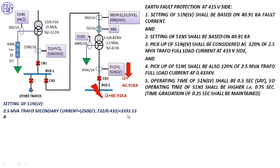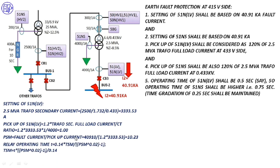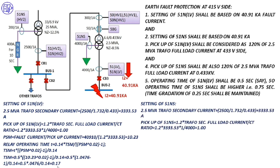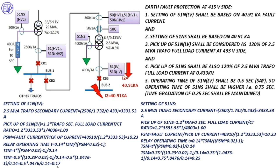Settings of 51NLV: pickup is 120% of transformer full load secondary current of 3333.53 A, divided by CT ratio of 1, giving a pickup of 1. PSM is calculated as 10.23. Based on a relay operating time of 0.5 seconds, TSM is found as 0.17. So this relay is set with pickup = 1 and TSM = 0.17. For 51NS, pickup is similarly 120% of transformer secondary full load current divided by CT ratio, giving pickup = 1, PSM = 10.23, relay operating time = 0.75 seconds, and TSM = 0.25.